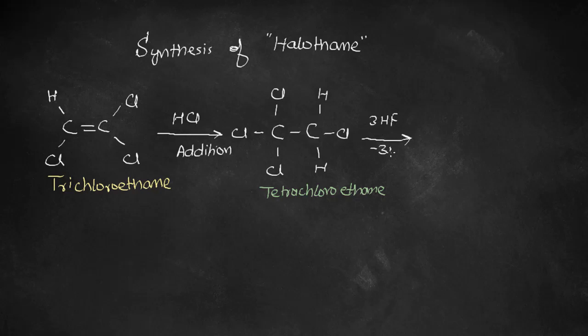This upon further reaction with three HF removes three HCl, forming the compound known as 2-chloro-trifluoroethene. We have chlorine at the second carbon and three fluorines at the first carbon, which is why we name this compound 2-chloro-trifluoroethene.